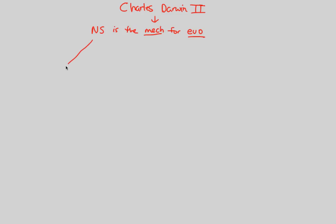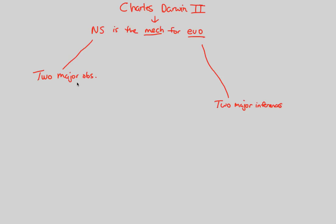There were two major observations that Mr. Charles Darwin made — two major observations. And out of these two major observations came what we would consider two major inferences, all of which were written down in his book in 1859, On the Origin of Species. These major observations were based off of his journey on the Beagle, a five-year journey, and those inferences are based off of these observations. That's what an inference is — it's something based off of an observation.